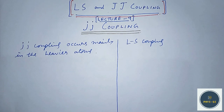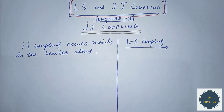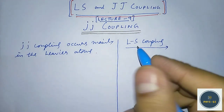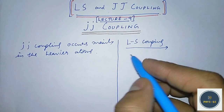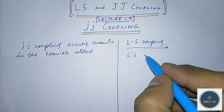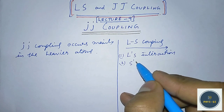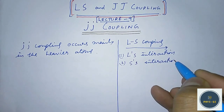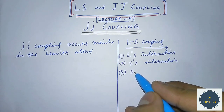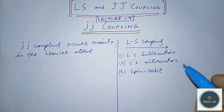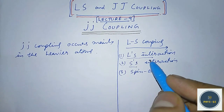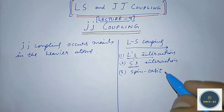There is a gradual shift from LS coupling to JJ coupling as we move from lower atomic number to higher atomic number. In LS coupling, what was happening: first, the various L's interact with each other — that was step 1. Then there was an interaction of the various spins. And the third was the spin-orbit coupling — the coupling of the resultant L's and the resultant spins.